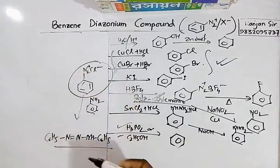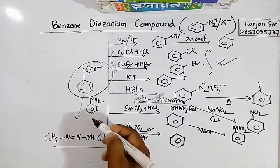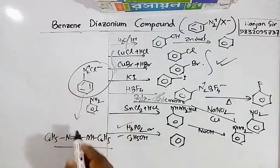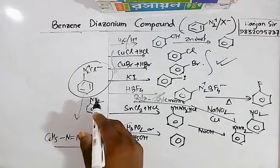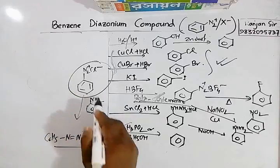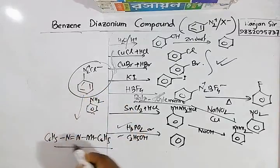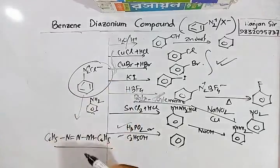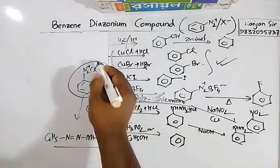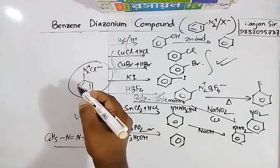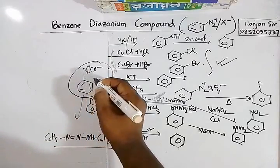During the preparation of benzene diazonium chloride, if aniline is in excess in the medium, it will react with the produced benzene diazonium chloride to form diazoaminobenzene. That is why the solution is kept acidic by adding a small amount of extra HCl.